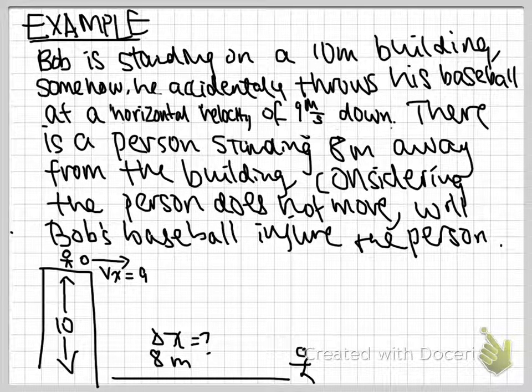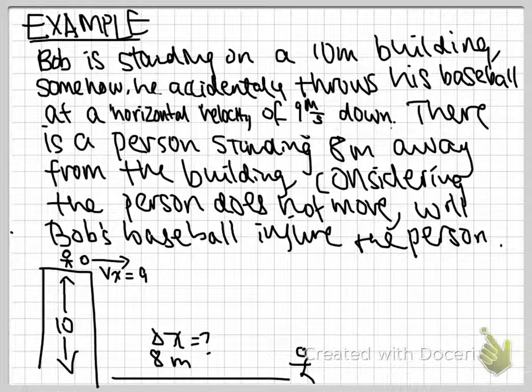So here is a diagram of how the situation would look like. There is a 10 meter building, and there is a person standing 8 meters away from the building. And there is the horizontal velocity for the ball at 9 meters per second. So in order to solve this problem,